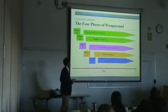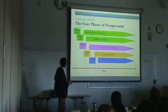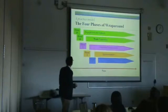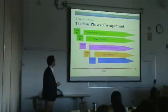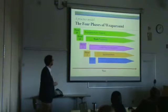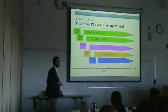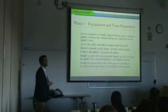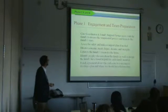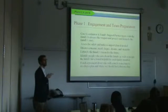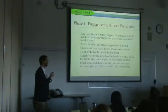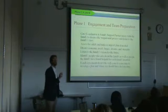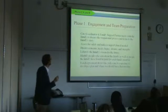Once they're trained, what they're doing is taking the family or the youth through four phases: engagement and team preparation, initial plan development, plan implementation, and then a transition phase. Here are some examples of what happens during each of those phases, and these individuals are increasingly being trained and coached to do this with consistency.